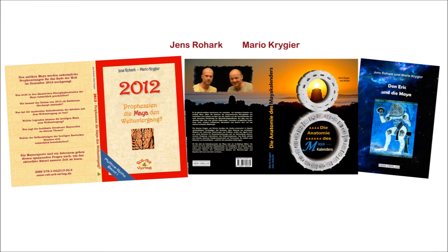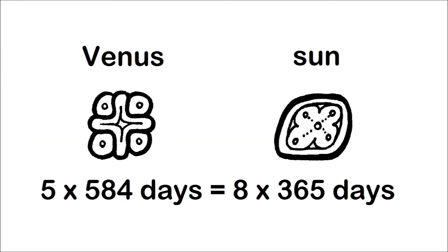We've written a couple of books about this topic. In those books we explain the exact correlation which has to be used, and we also explain why the ancient Maya did not use leap years. One of the main reasons is the famous formula of Venus: one year of Venus has 584 days, and five years of Venus equal eight solar years.